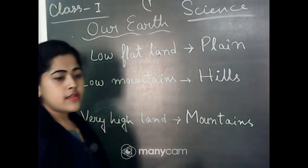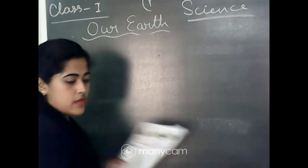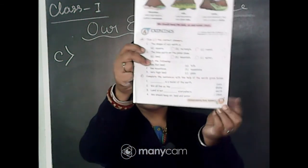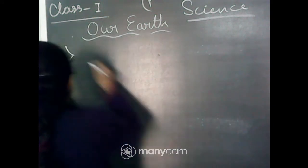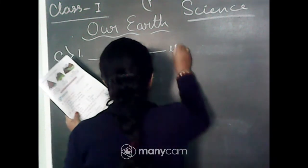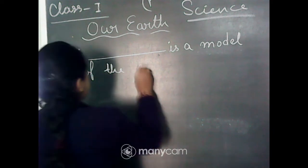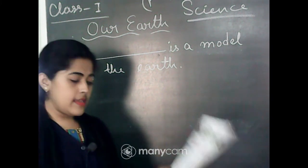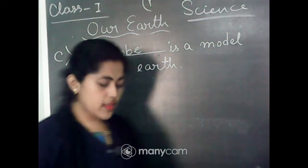We have completed Question B. Hope you all copied it in your copy book. Now go to Question C: 'Complete the sentence with the help of the words given below.' There are sentences with blanks, and some words are given in a blue box. You have to fill in the blanks using those words. First sentence: blank is a model of the Earth. The answer is globe — globe is the model of the Earth.